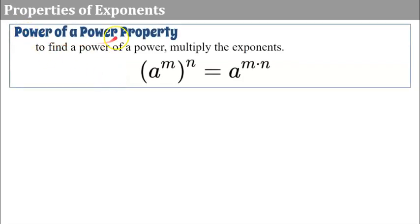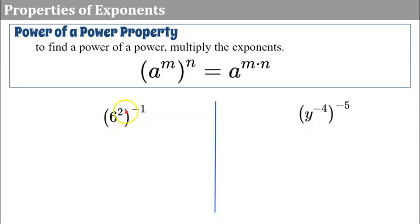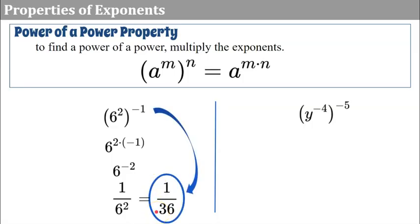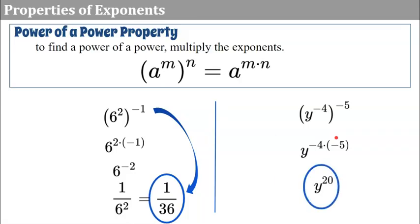The power of a power property states that to find a power of a power, we multiply the exponents. So a to the m, raised to the n, equals a to the m times n. For example, six squared to the negative one: multiply the exponents, two times negative one equals negative two, which becomes one over six squared to clear the negative exponent, equaling one over 36. For your practice: negative four times negative five equals positive 20, giving x to the 20th as the answer in simplest form.